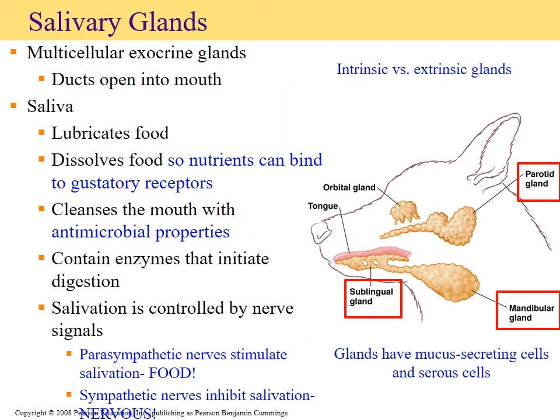Saliva is a very important component of the digestive system. It wets and lubricates food, making it easier to break it into bolus form. As food becomes wet, it can interact with the gustation receptors on the tongue so we can taste what we're consuming. Saliva is mostly water and a neutral solution, and it also contains digestive enzymes — including salivary amylase and lipase found in the mouth.